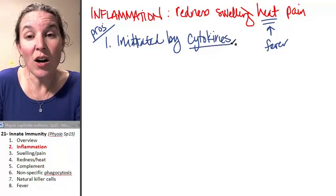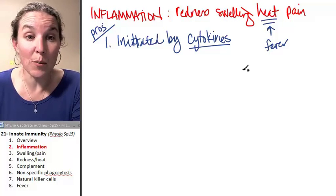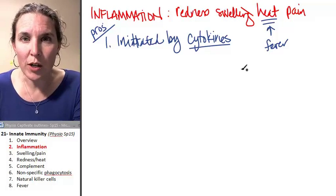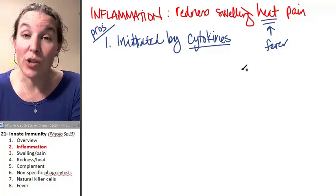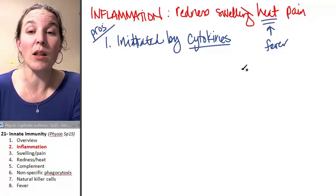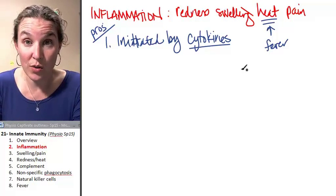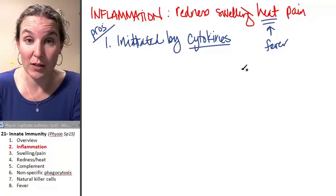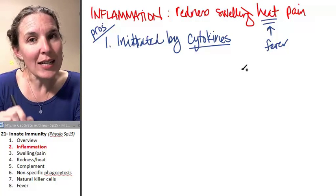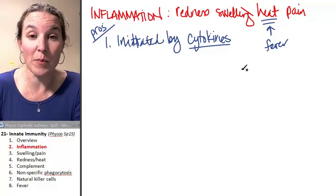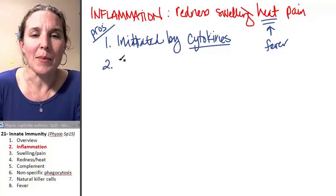Cytokines are a flavor of communicating molecule in the body. Hormones are communicating molecules. Neurotransmitters are communicating molecules. Cytokines are communicating molecules that usually are associated with an immune response. So inflammatory cytokines initiate inflammation. That makes complete sense.